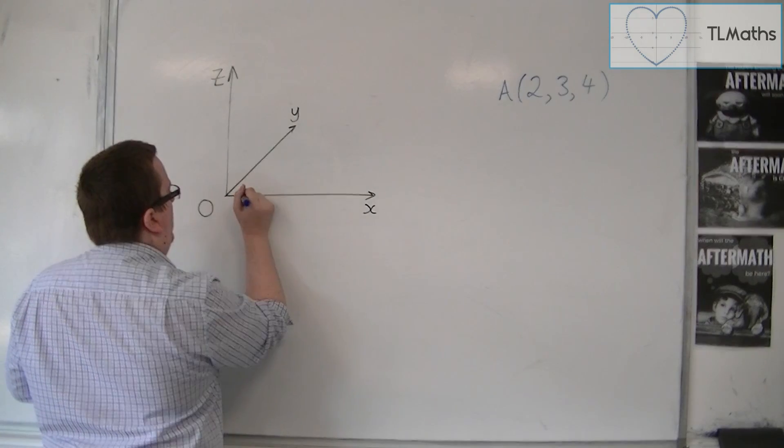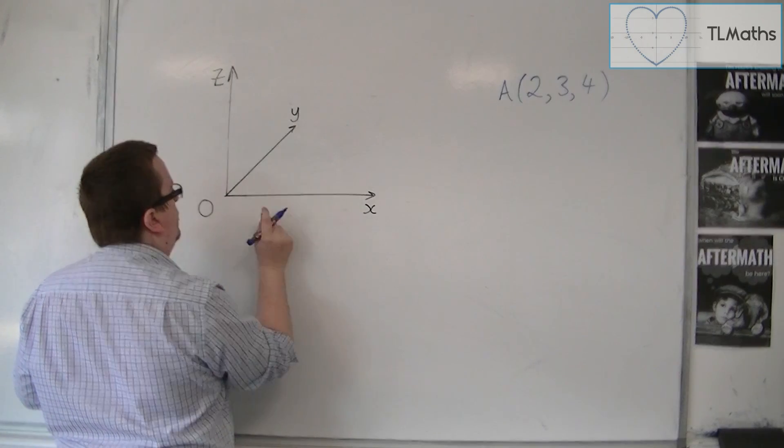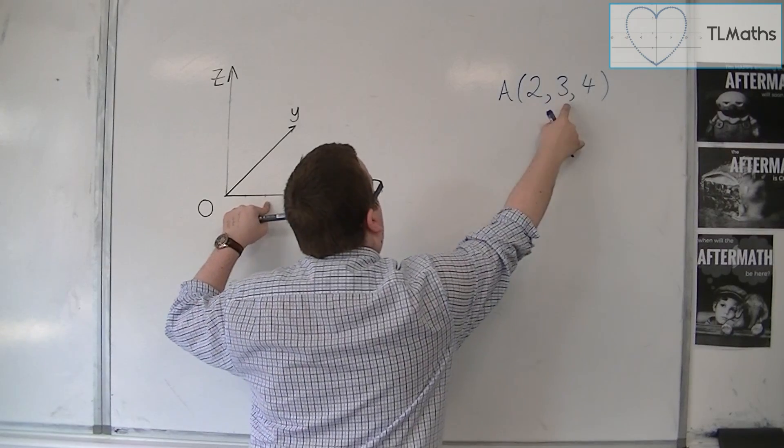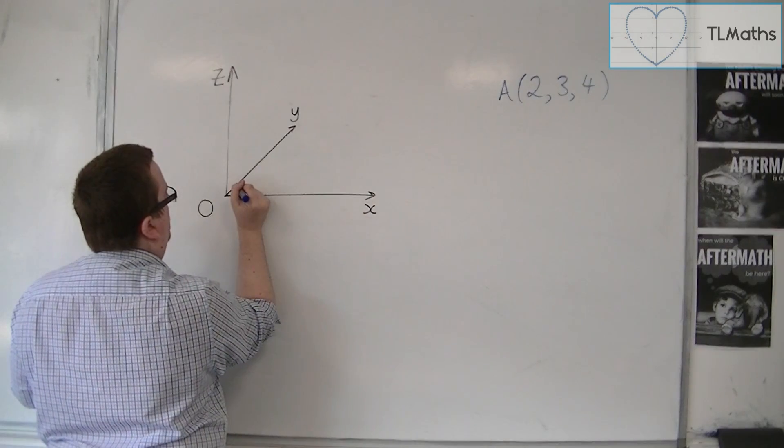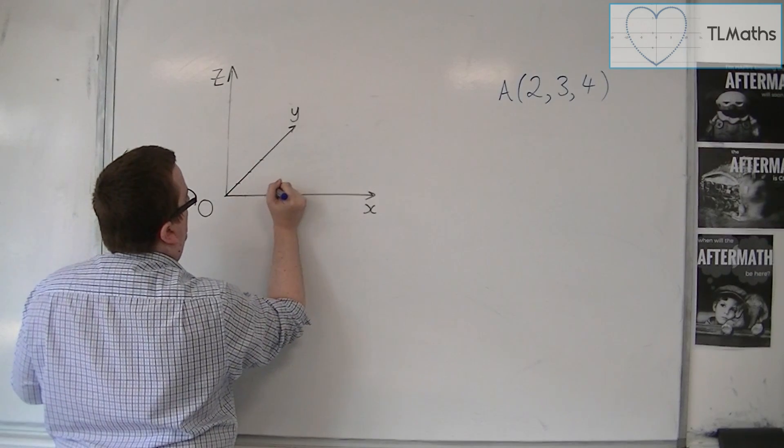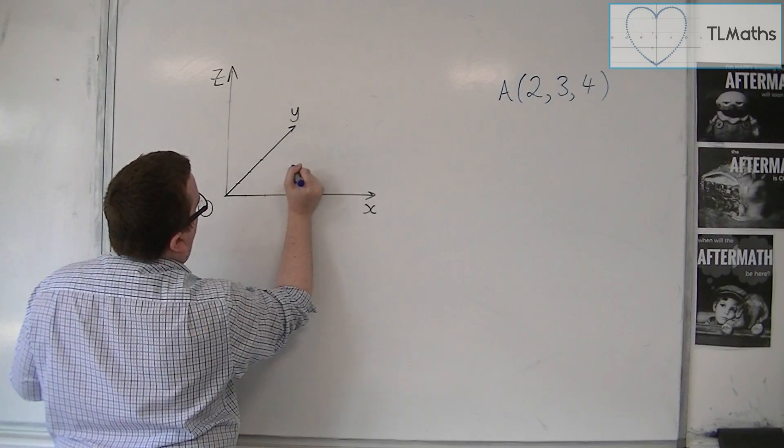So we're going to be going 1, 2 along in the x direction, so that's your x value, then 3 along in the y direction, so 1, 2, 3. So it would be something like 1, 2, 3, so along there.